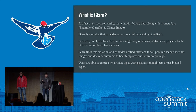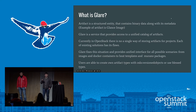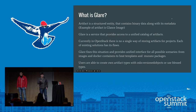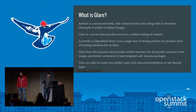Currently, several artifact types are already included in Glare. We call them blessed artifact types. They are images, Heat templates, Heat environments, Murano packages, and Tosca templates. Soon we are going to add torrents for the Ironic project.